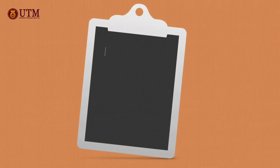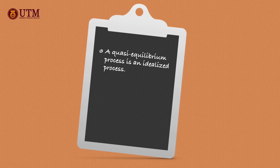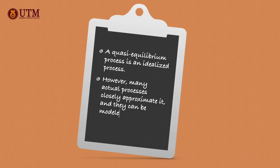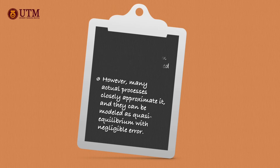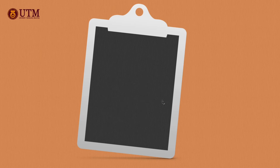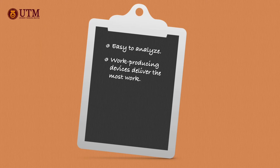A quasi-equilibrium process is an idealized process, and it is not an accurate representation of an actual process. However, many actual processes closely approximate it, and they can be modeled as quasi-equilibrium with negligible error. Therefore, quasi-equilibrium processes serve as standards to which actual processes can be compared.